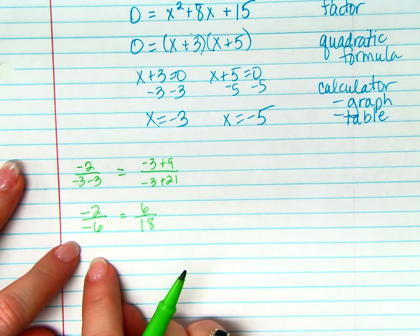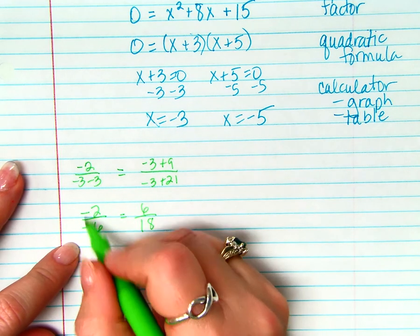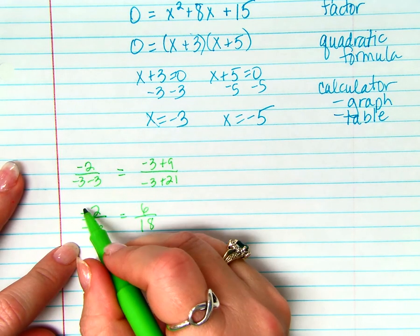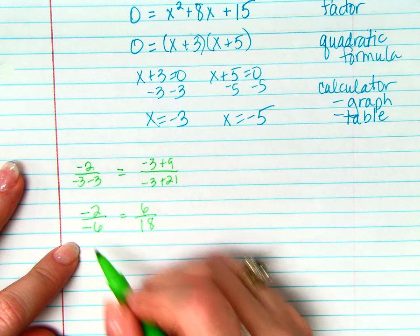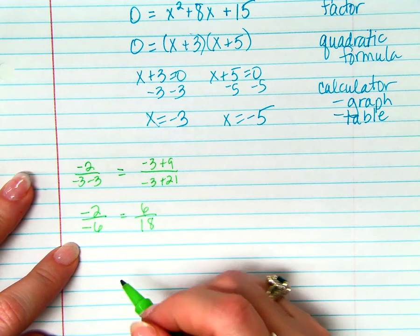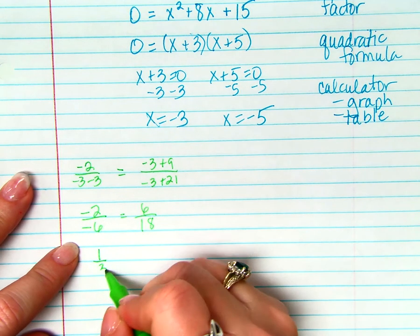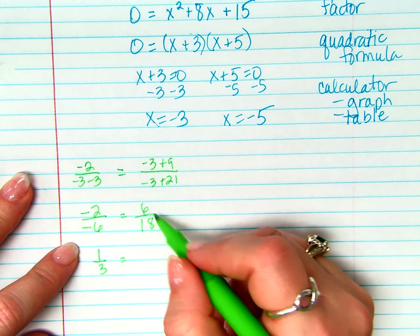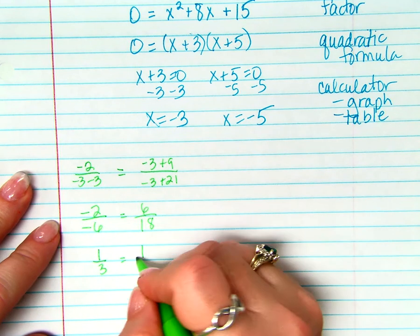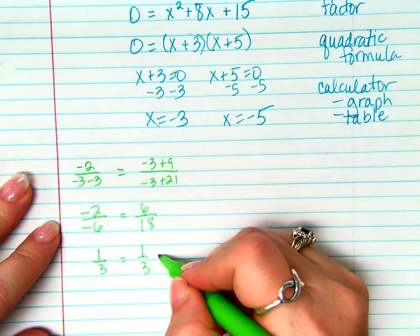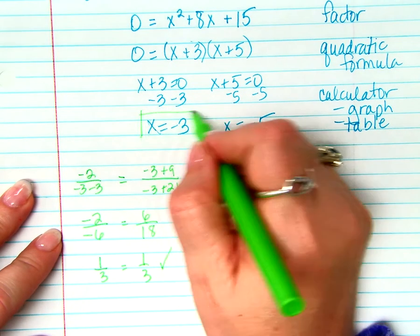What does this simplify to? The negatives will simplify to 1 because negative divided by negative, negative 1 divided by negative 1 is positive 1. And then I get 1 third. What does this simplify to? 1 third. Does negative 3 work? Yes. Negative 3 works.